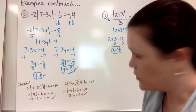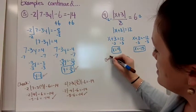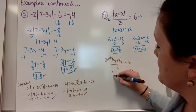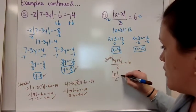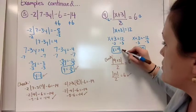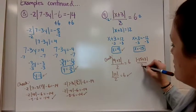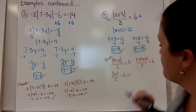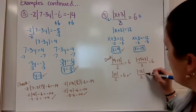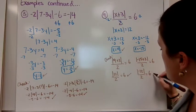Let's check our answers. Plug in x equals nine: the absolute value of nine plus three, divided by two, equals the absolute value of 12 divided by two, which equals six. That checks out. Now plug in x equals negative 15: the absolute value of negative 15 plus three is the absolute value of negative 12, which is positive 12, divided by two equals six. So both solutions are confirmed: x equals nine and x equals negative 15.